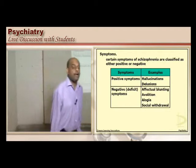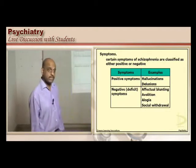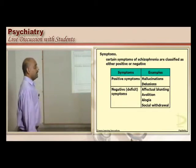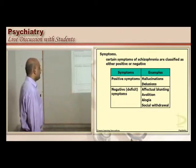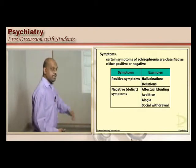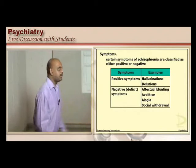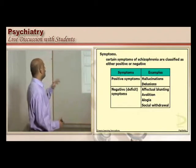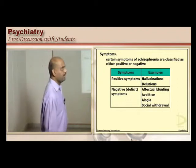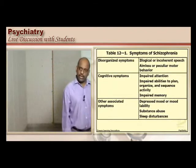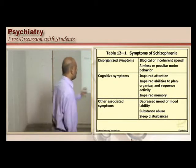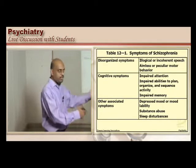Some symptoms are called positive symptoms and some are called negative symptoms in schizophrenia. Hallucinations and delusions are positive symptoms. Blunting of affect, avolition, inability to execute, alogia, losing the logical way of deduction, and social withdrawal are all considered deficit symptoms — otherwise called negative symptoms. Some symptoms are called disorganized: illogical and incoherent speech, and aimless or peculiar motor behavior are examples of disorganized symptoms.